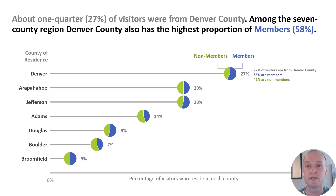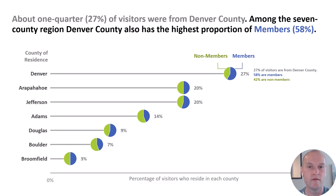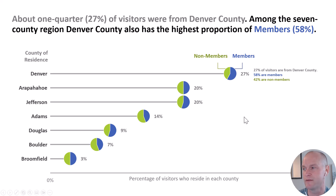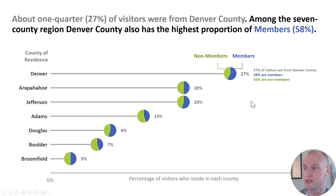Then I had one other option: the lollipop chart. This was actually the option people said they liked best on Instagram. The lollipop is kind of like the dot plot but it gets rid of the trailing line across the page, so you can really see that 27% of our visitors were from Denver County and then the percentage breakdown between them. The annotations and labels are just text boxes and line shapes.